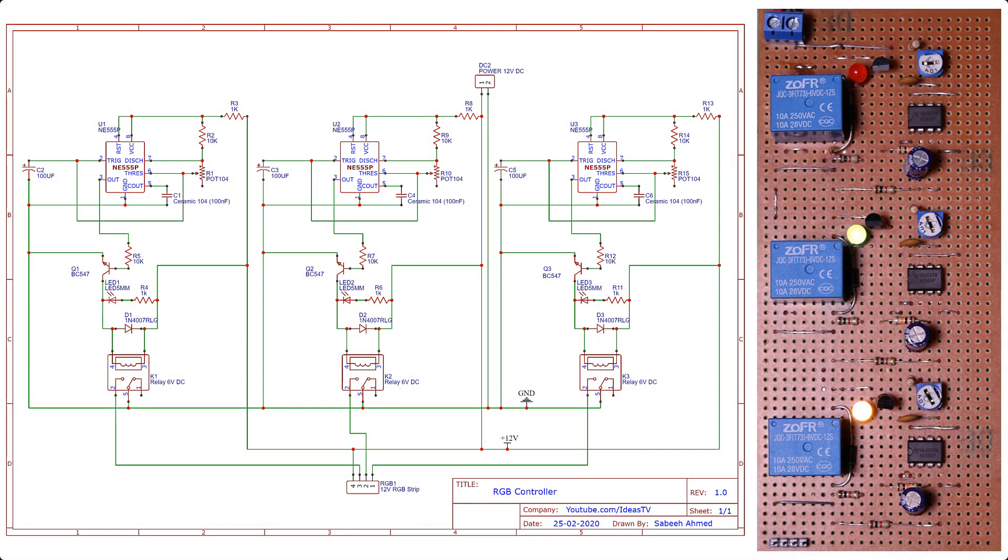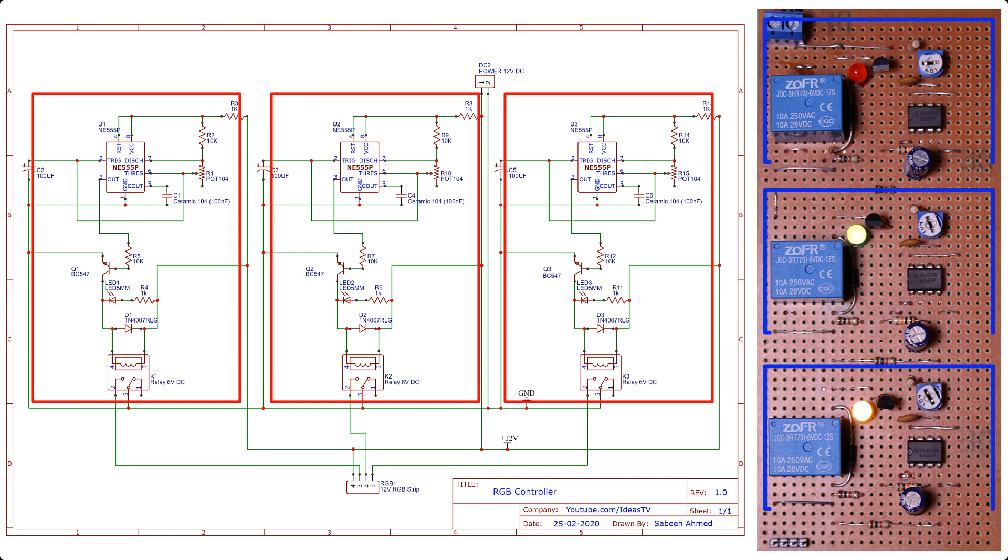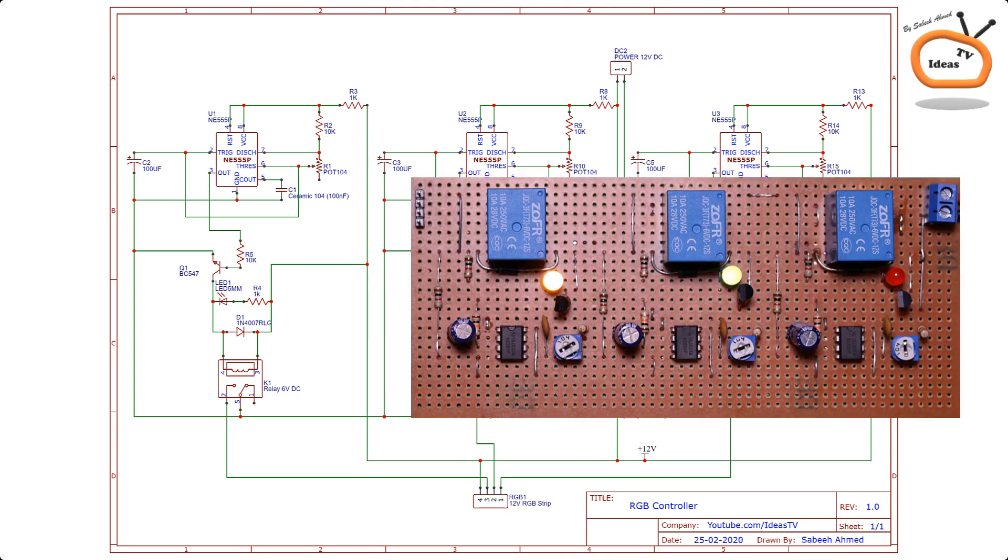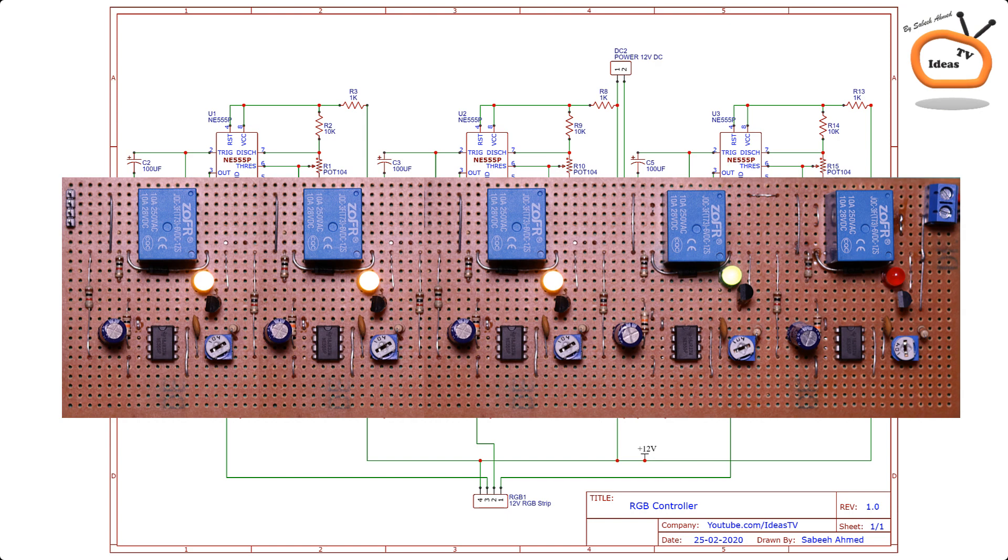As you can see, the circuit diagram consists of three cells or you can say three same circuits. Each circuit contains some components that work together to control a specific color of LED in the whole RGB strip. So if you want to control more LEDs of different colors, you just need to add more cells or circuits in parallel combination.